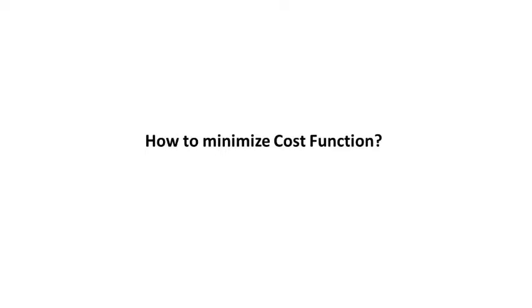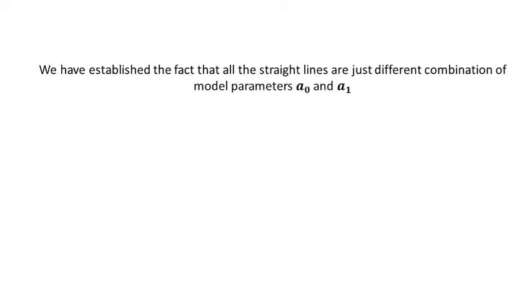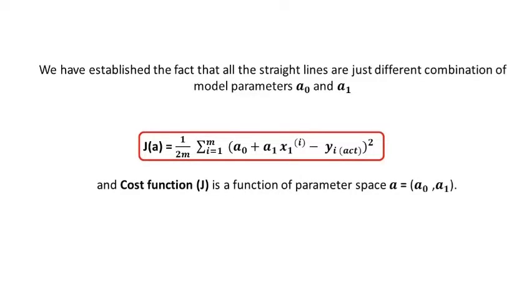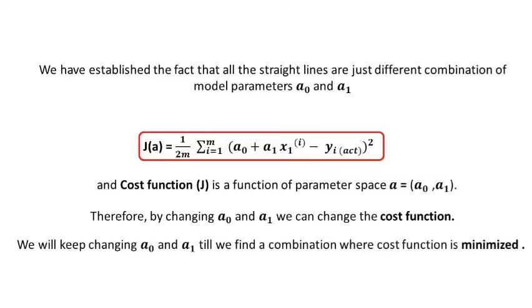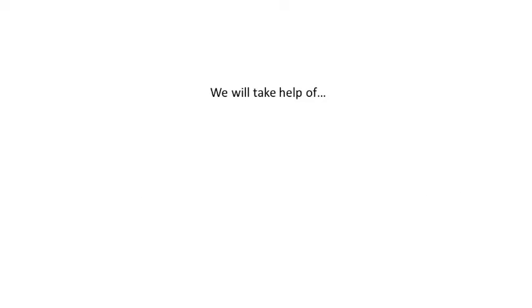We have established the fact that all the straight lines are just different combinations of model parameters a naught and a1. And cost function is a function of parameter space as well. Therefore, by changing a naught and a1, we can change the cost function. We will keep changing a naught and a1 till we find a combination where cost function is minimized. And for this we will take help of gradient descent algorithm.